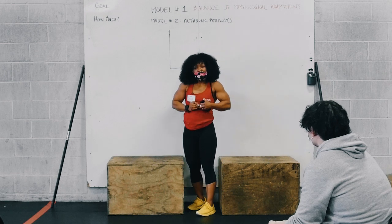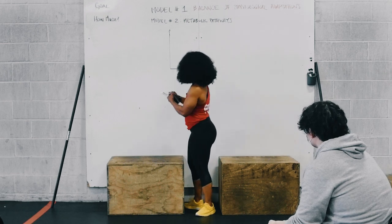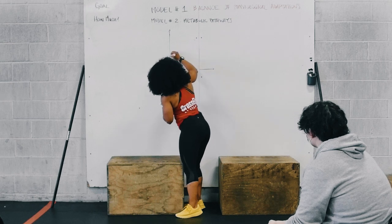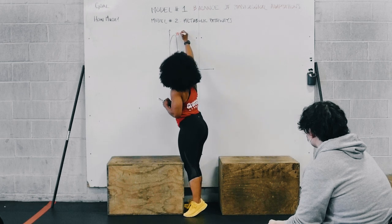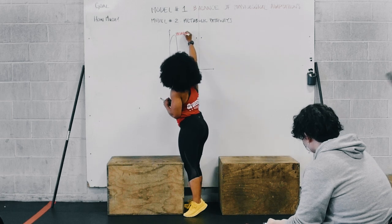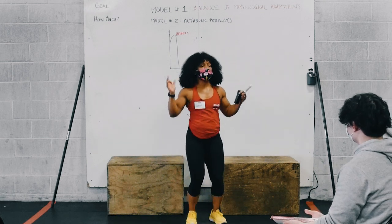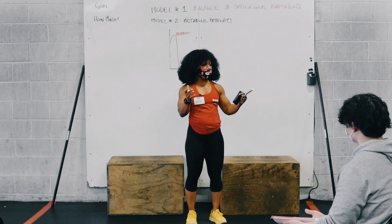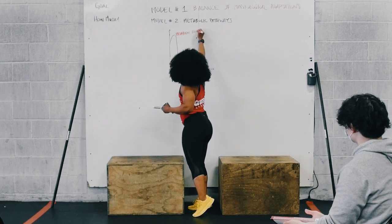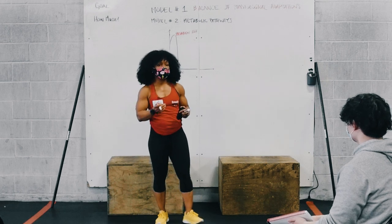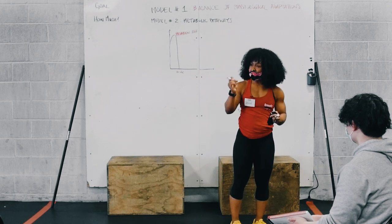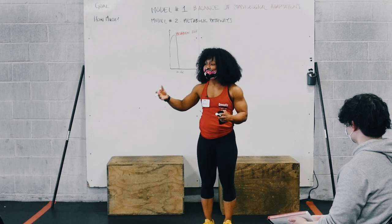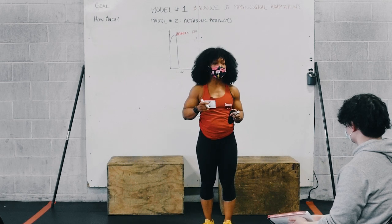So we've got the phosphagen or phosphocreatine pathway, and that one lasts for about 10 seconds. That fuels activities that require 100% of your power output. What drives that is ADP — adenosine triphosphate — which is the energy molecule that these different pathways produce to make that activity happen.